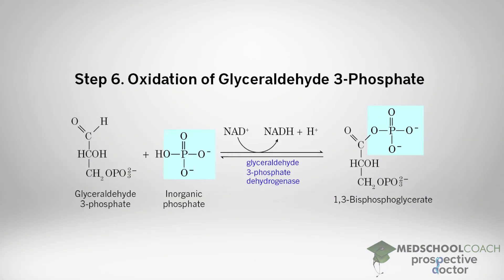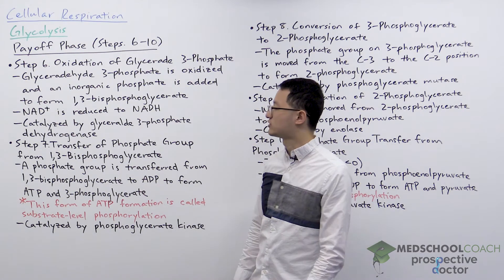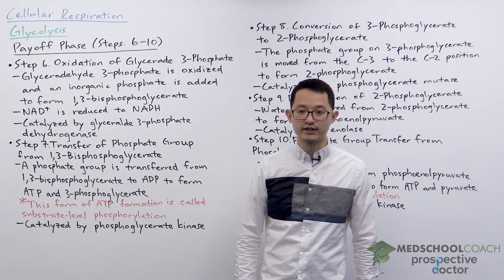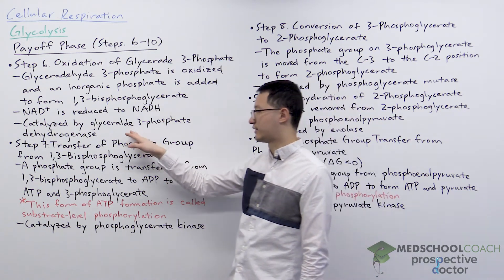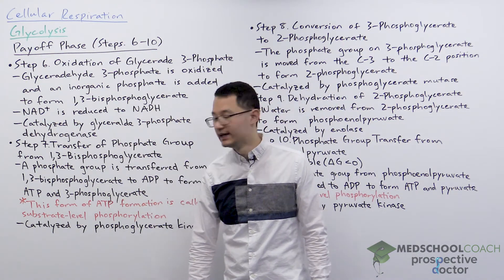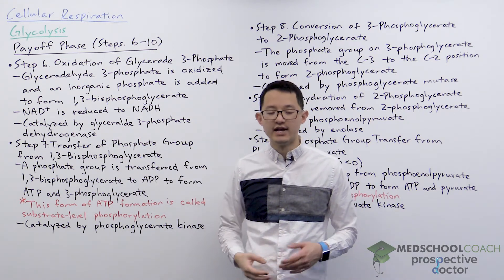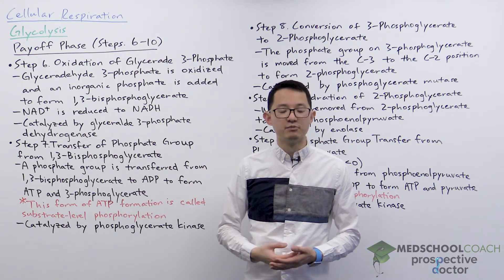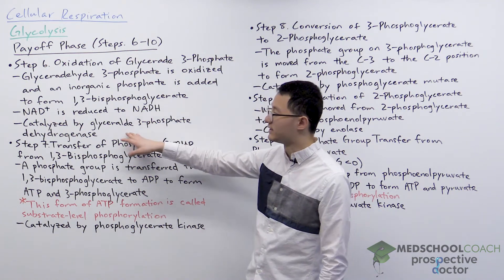In this diagram you can see how glyceraldehyde 3-phosphate is oxidized and an inorganic phosphate molecule is added, resulting in the formation of 1,3-bisphosphoglycerate and NADH. Essentially, electrons are transferred from glyceraldehyde 3-phosphate to NAD+ — that's the redox reaction. This reaction is catalyzed by glyceraldehyde 3-phosphate dehydrogenase; 'dehydrogenase' indicates an enzyme that removes hydrogens, which is an oxidation reaction.